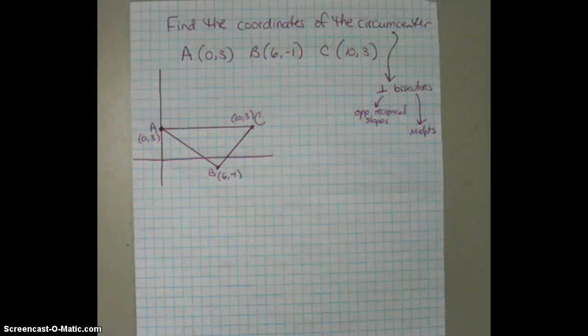And since the circumcenter is a point of concurrency, we know that any two of the perpendicular bisectors will intersect at the circumcenter. So we really only need to find two of the perpendicular bisectors. We don't have to do all three.